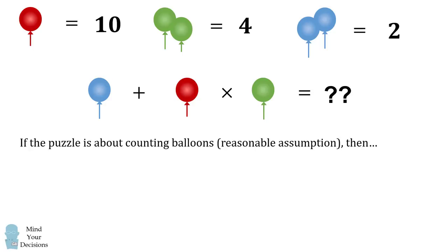Well, if this puzzle is about counting balloons, which is a reasonable assumption, then we can take the single value to be half of the pair. So a single green balloon will be equal to half of 4 which is 2 and a single blue balloon will be equal to 1. We then substitute in these values.